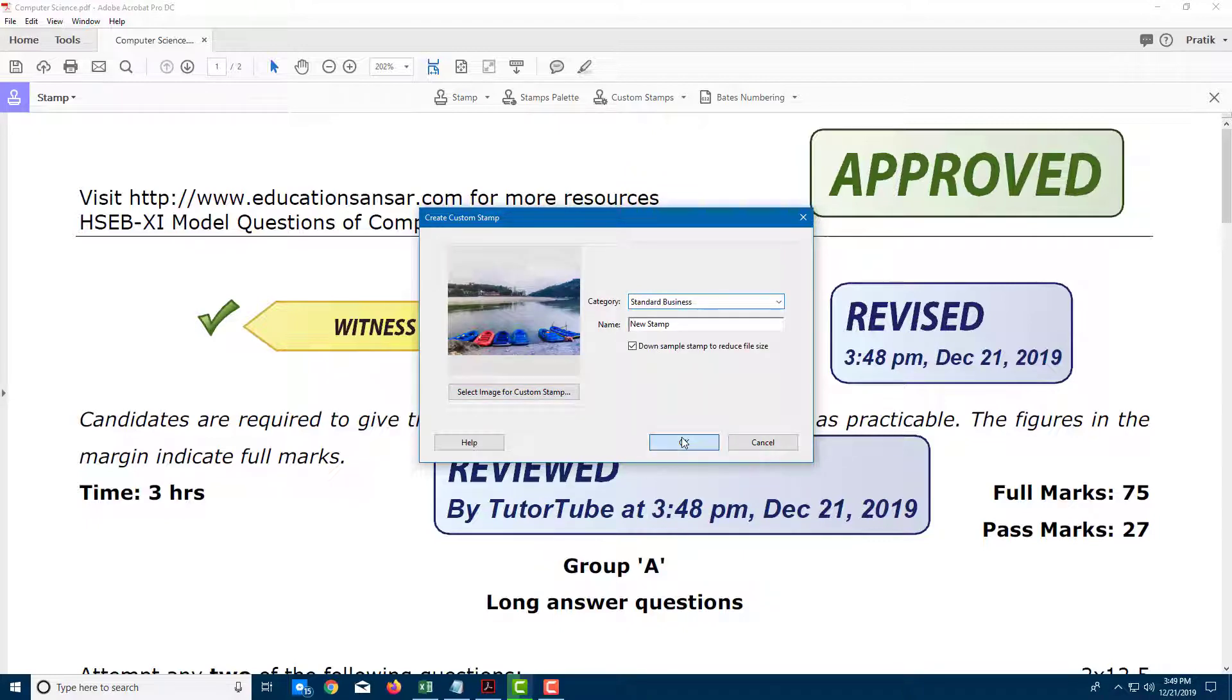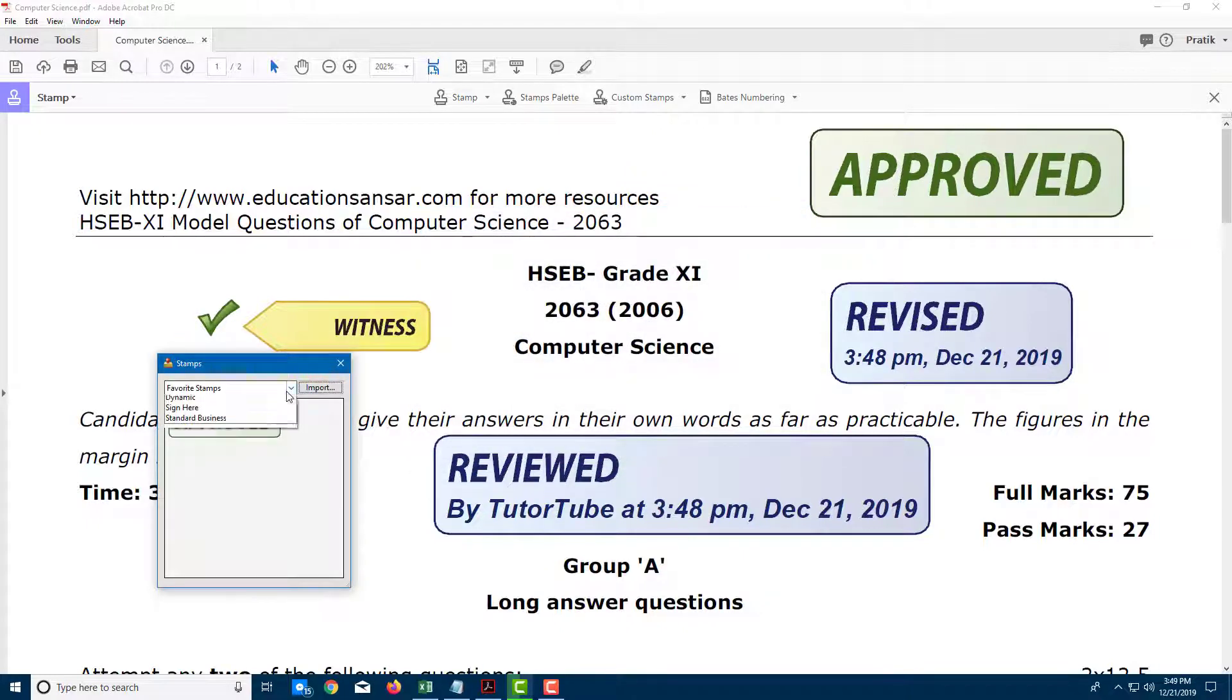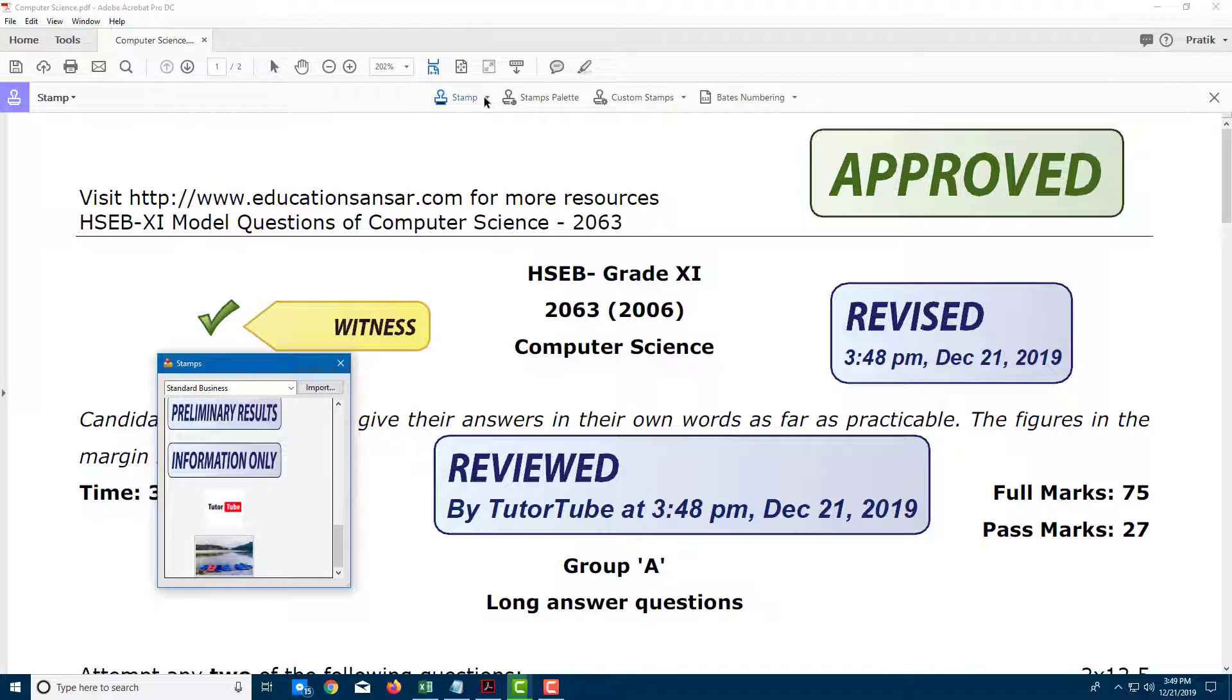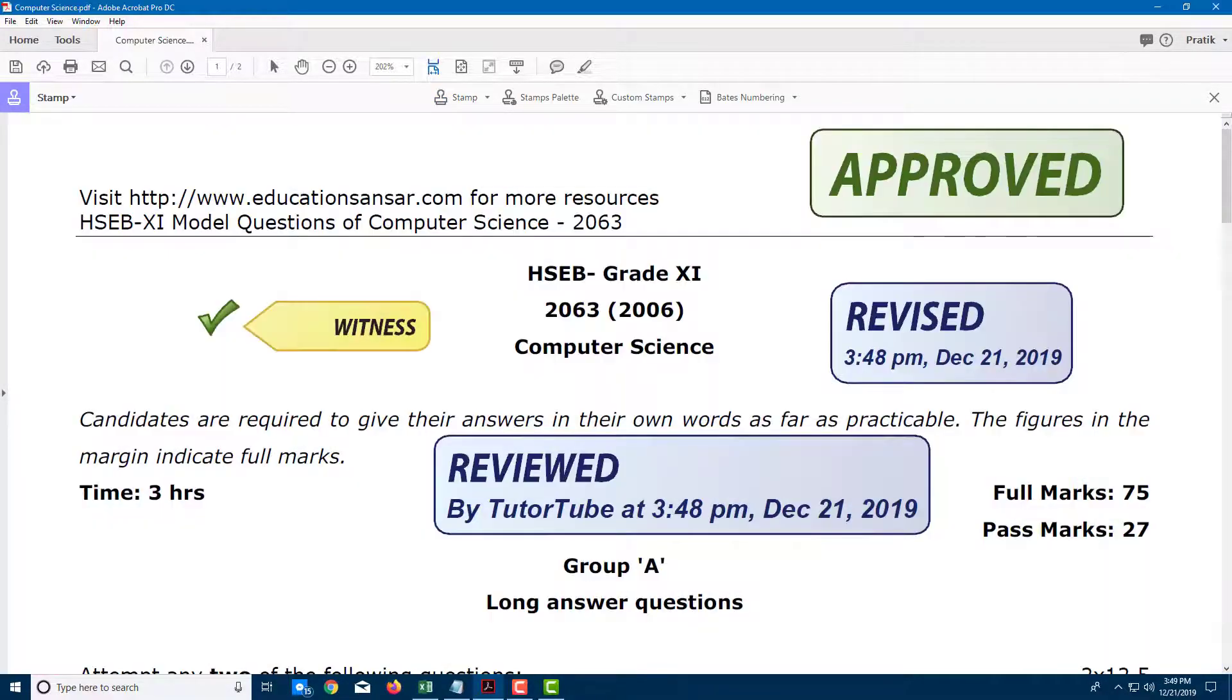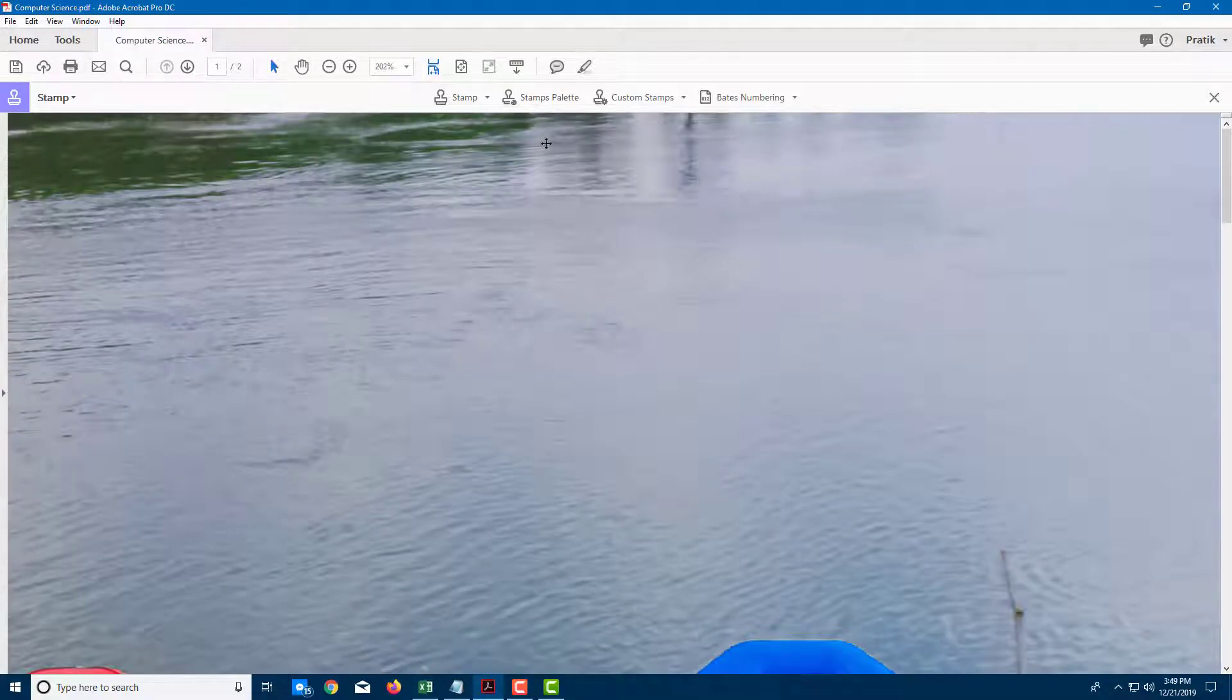You can change this to Standard Business stamp, press OK, and the stamp will be there in Standard Business. Once you do that, you'll be able to access the stamp right here. This is quite a big stamp as you can see, and the stamp is applied.